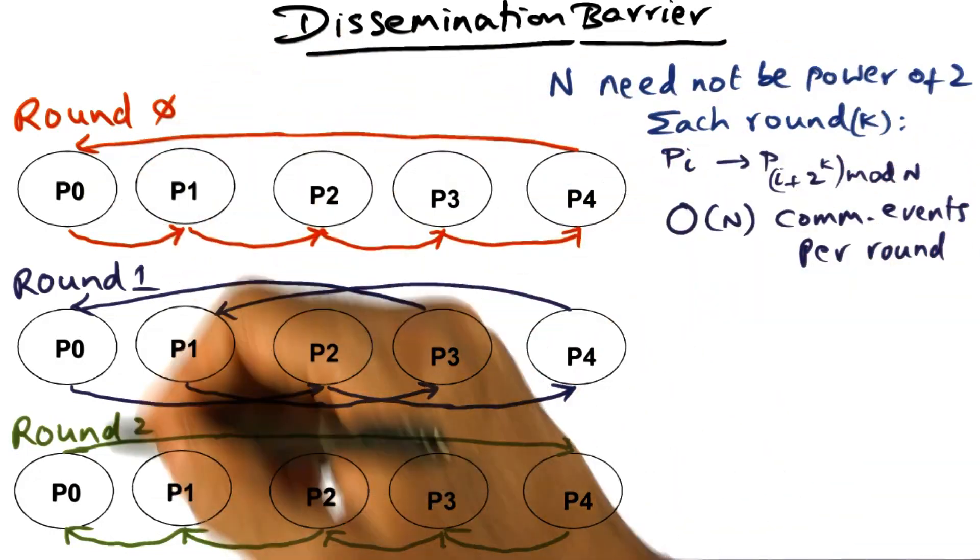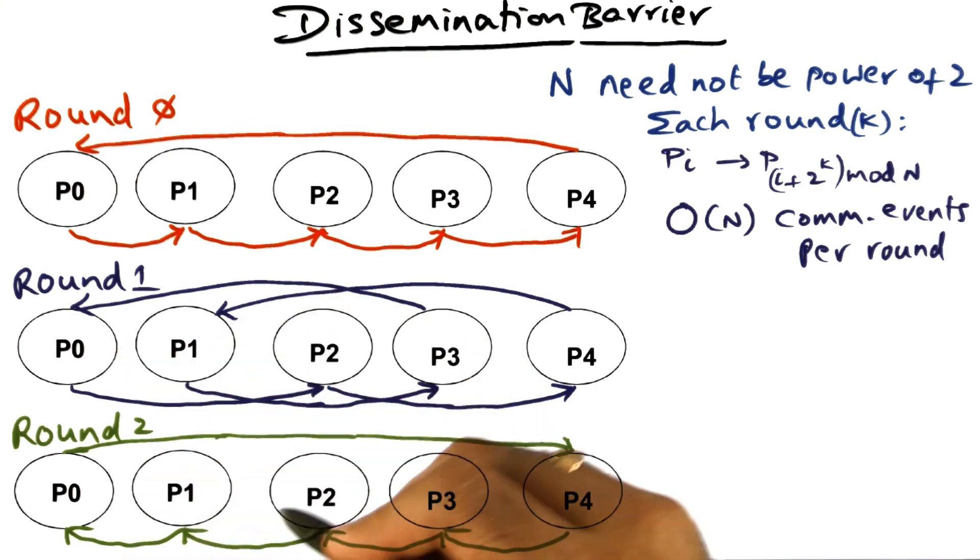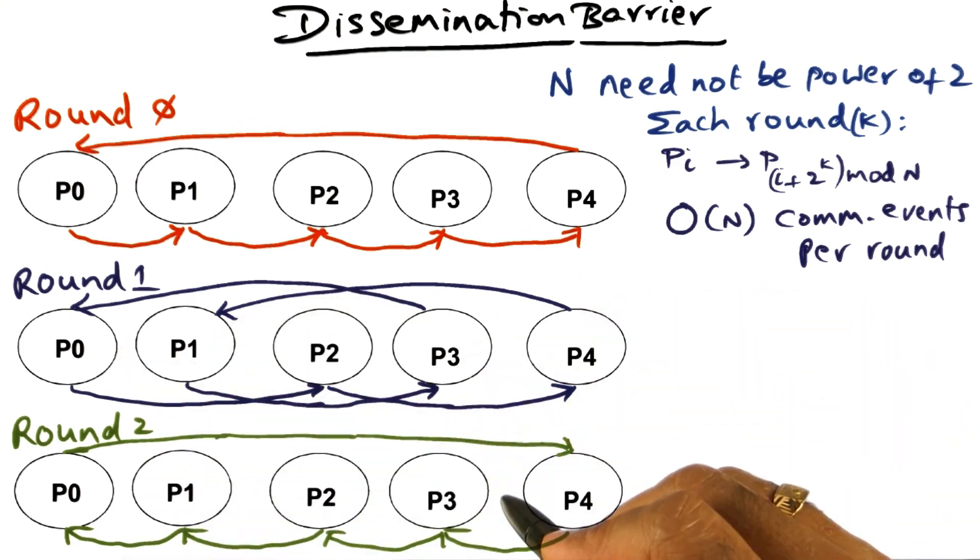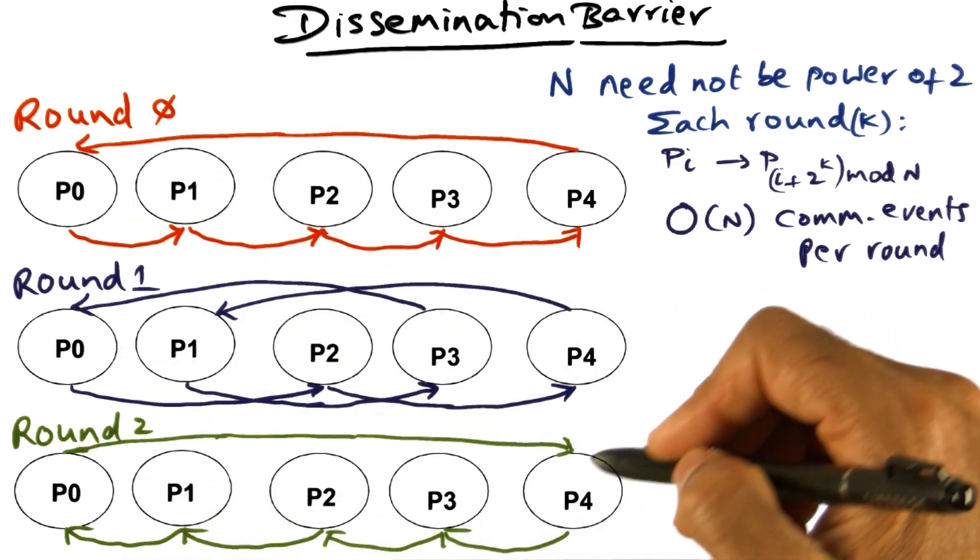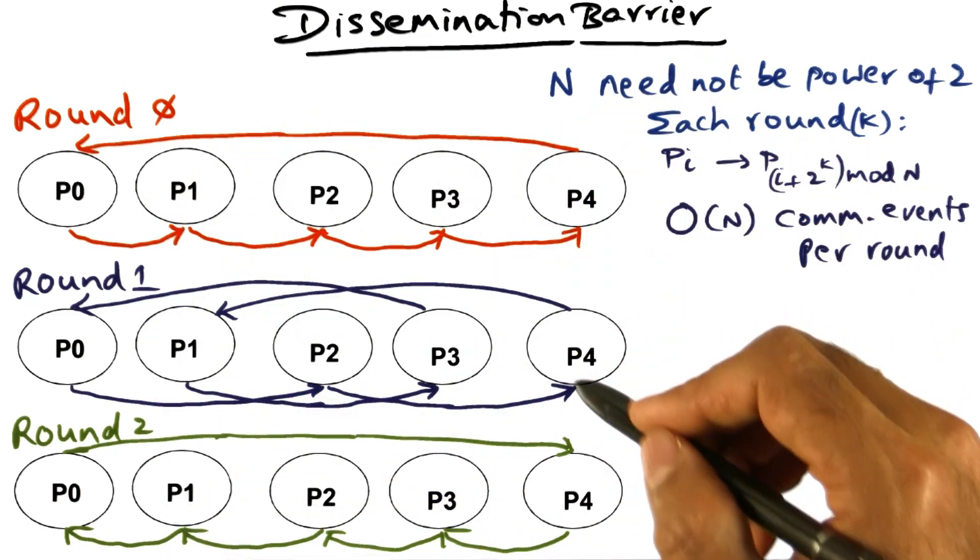So with n equal to five, at the end of round two, every processor has heard from every other processor in the entire system. You can eyeball this figure and see that every processor has gotten a message from every other processor.